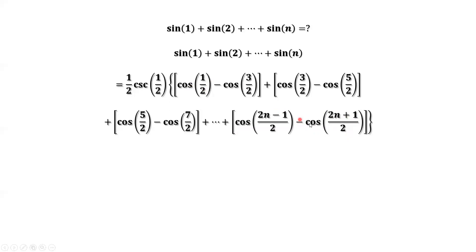Therefore, the final answer is one half times cosecant of one half, then times cosine of one half minus cosine of two n plus one over two. This is the answer.